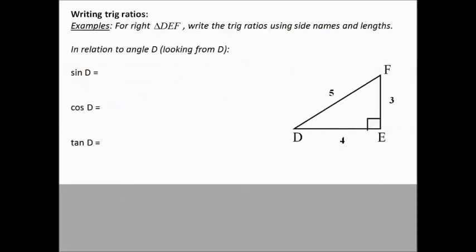So writing trig ratios. First of all, I see that I'm going to be using sine, cosine, and tangent. So near this problem, I'm going to write SOH CAH TOA.